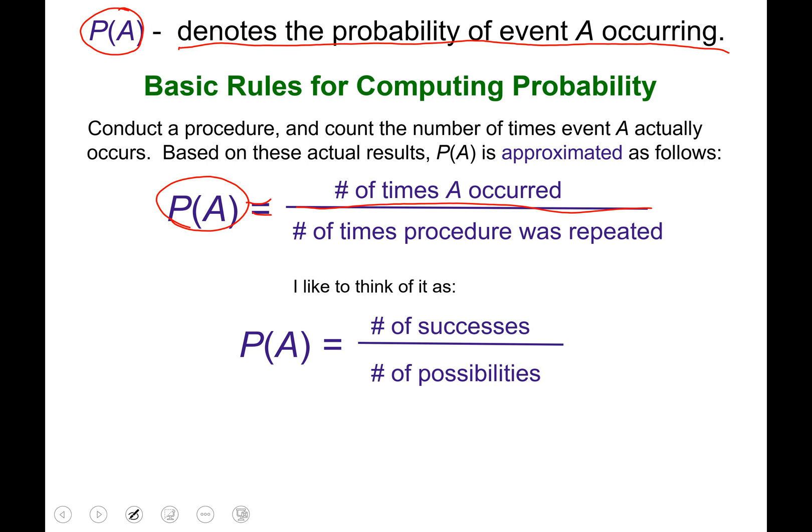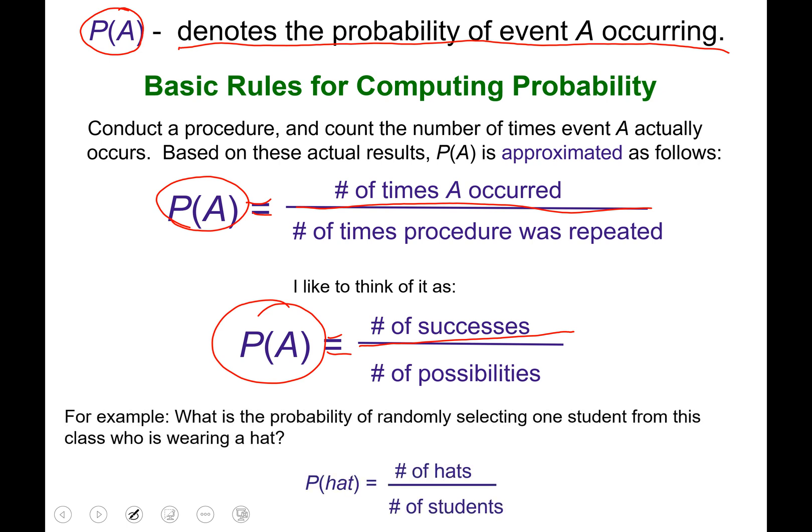I like to think of it as the probability that event A will occur is equal to the number of successes divided by the number of possibilities. So let's look at an example.